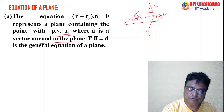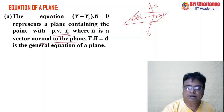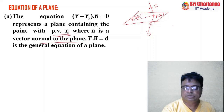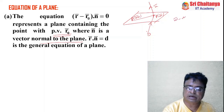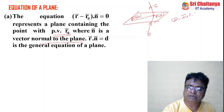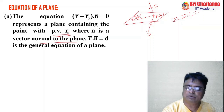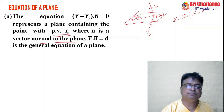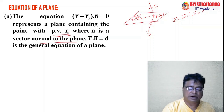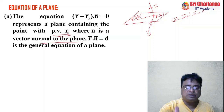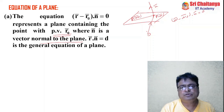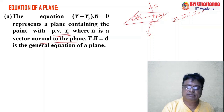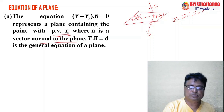Since n̄ is the vector perpendicular to the plane, PR̄ is perpendicular to n̄. That means (r̄ - r̄₀) · n̄ = 0, which is the equation of the plane containing the point r̄₀ and having n̄ as the vector perpendicular to the plane. If r̄₀ = 0, then it is the vector equation of the plane passing through the origin.